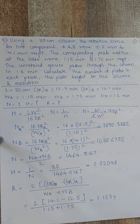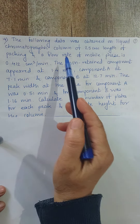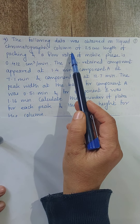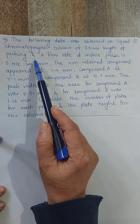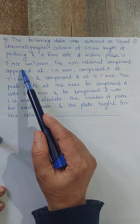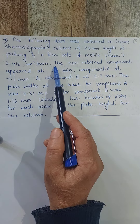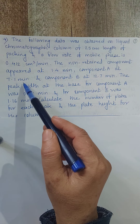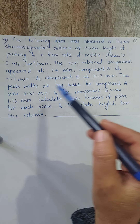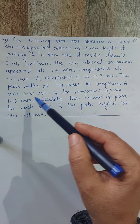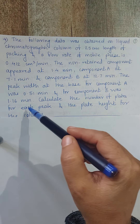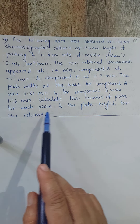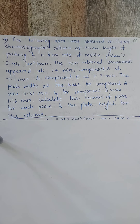Fourth problem: The following data was obtained on a liquid chromatographic column of 25 cm length with a mobile phase flow rate of 0.412 cm³/min. The non-retained component appeared at 1.4 minutes, component A at 7.1 minutes, component B at 12.7 minutes. Peak widths at the base: WA = 0.51 min, WB = 1.16 min. Calculate N for each peak and the plate height.